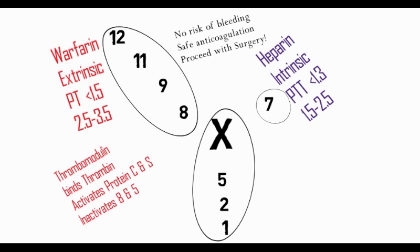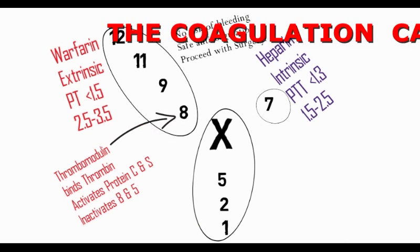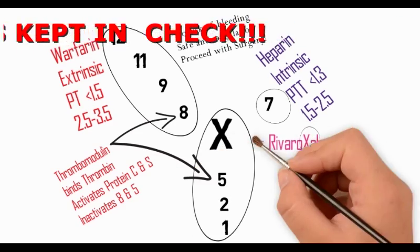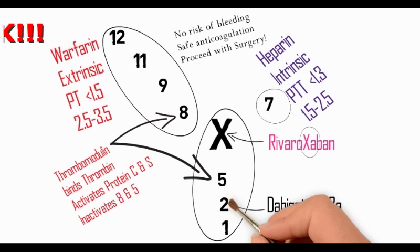One should remember that thrombomodulin binds to thrombin, thereby activating protein C and S, which inactivates factor VIII and V.